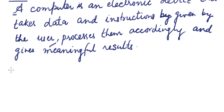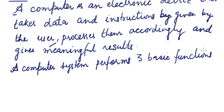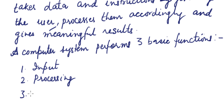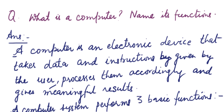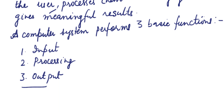The next sentence to write: a computer system performs three basic functions — one: input, two: processing, and three: output. So the complete answer is: a computer is an electronic device that takes data and instructions given by the user, processes them accordingly, and gives meaningful results. A computer system performs three basic functions: input, processing, and output.